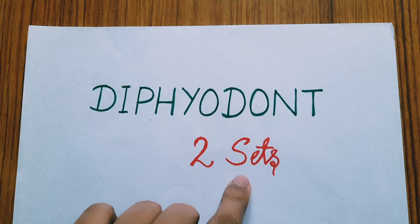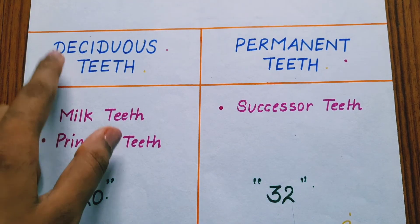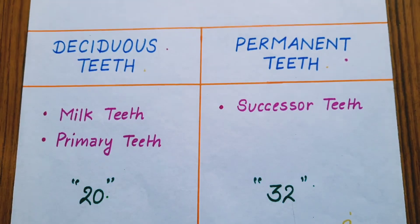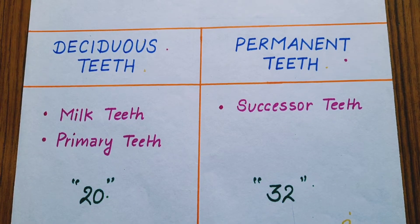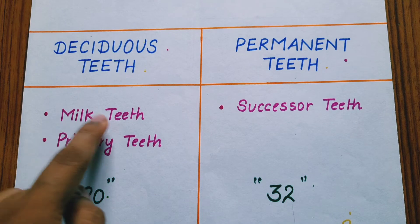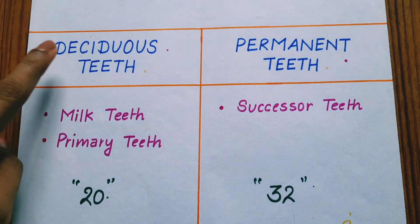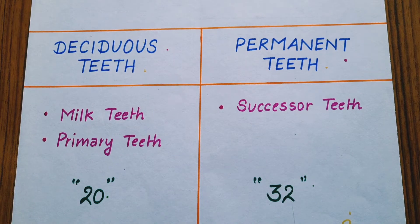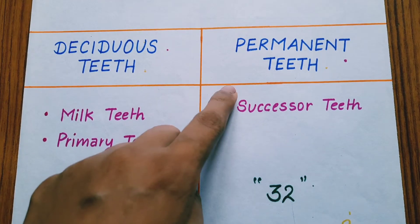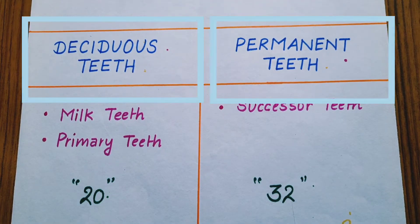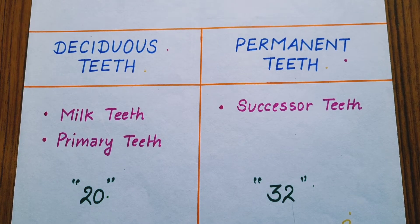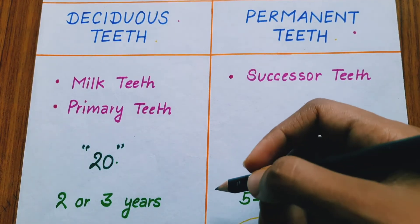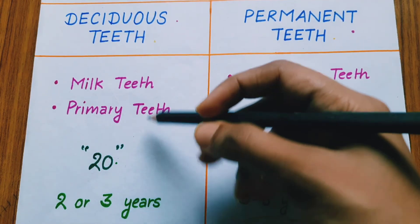Humans, like other mammals, are diphyodont. In simple words, diphyodont means teeth occur in two sets — one is the deciduous and the other is the permanent teeth. A few months after birth, a set of teeth begin to appear in babies. These are called the milk teeth, the primary teeth, or the deciduous teeth. After the deciduous teeth fall away, the next set of permanent teeth begin to appear.